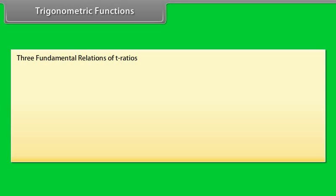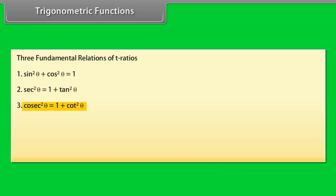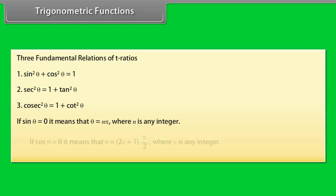Three fundamental relations of trigonometric ratios: sin²θ + cos²θ = 1; sec²θ = 1 + tan²θ; cosec²θ = 1 + cot²θ. If sin θ = 0, it means θ = nπ where n is any integer. If cos θ = 0, it means θ = (2n+1)·π/2 where n is any integer.